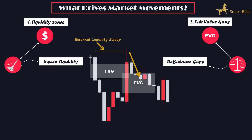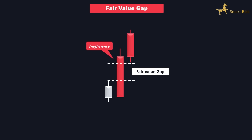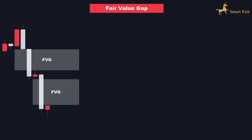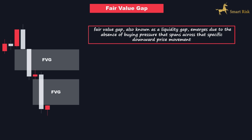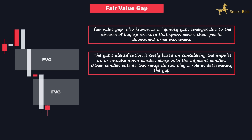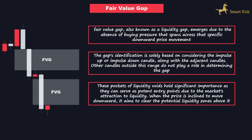Fair value gaps are typically formed within a three-candle sequence and are easily noticeable on the chart as a large candle. The distinguishing feature is that the upper and lower wicks of the neighboring candles do not completely overlap with its body. This creates what we call the fair value gap zone, which essentially fills the space between the wicks and is drawn on the body of the candle. A fair value gap, also known as a liquidity gap, emerges due to the absence of buying pressure across a specific downward price movement. The gap's identification is solely based on considering the impulse up or impulse down candle, along with the adjacent candles. These pockets of liquidity voids hold significant importance as they can serve as potent entry points due to the market's attraction to liquidity.